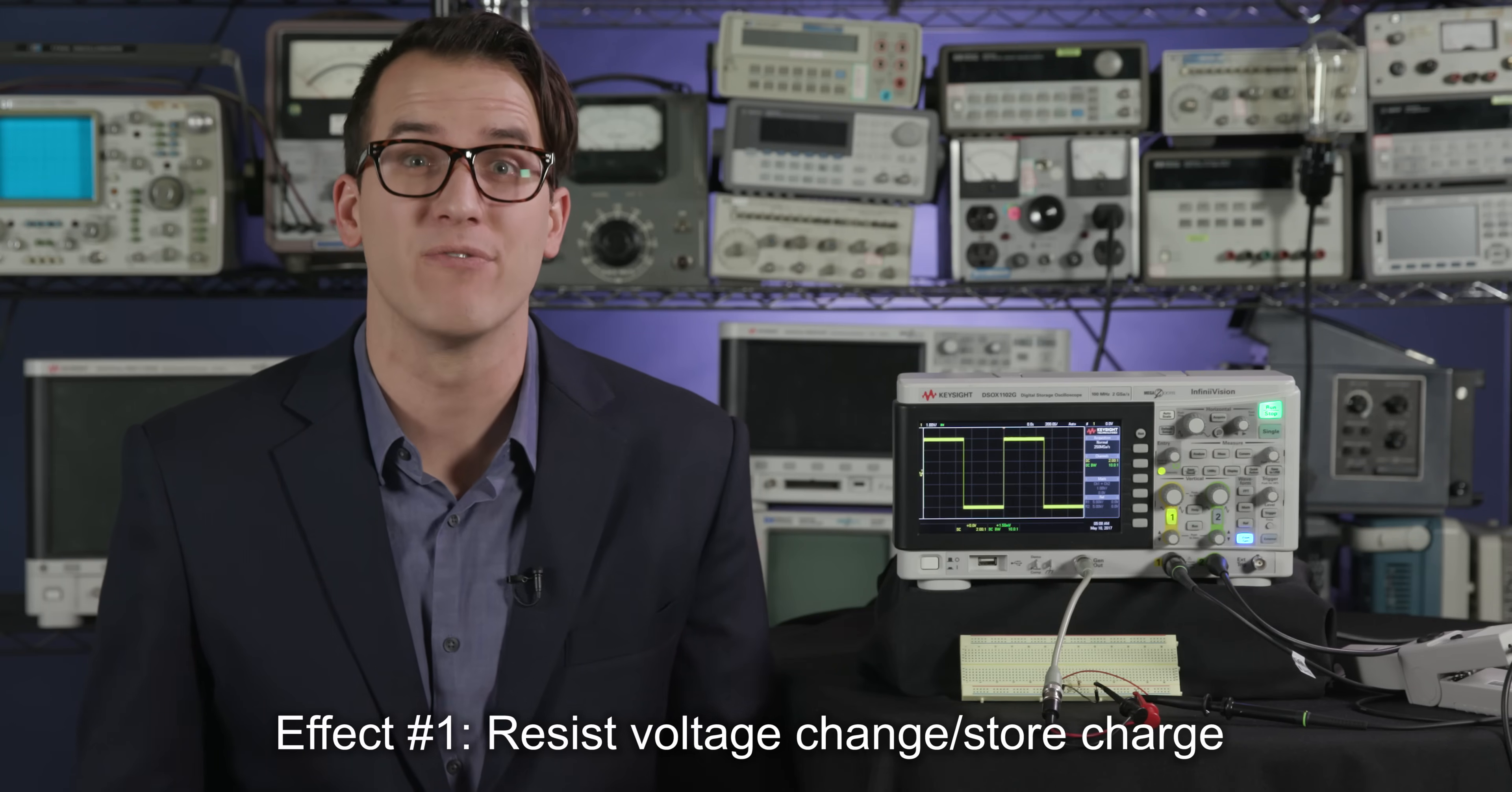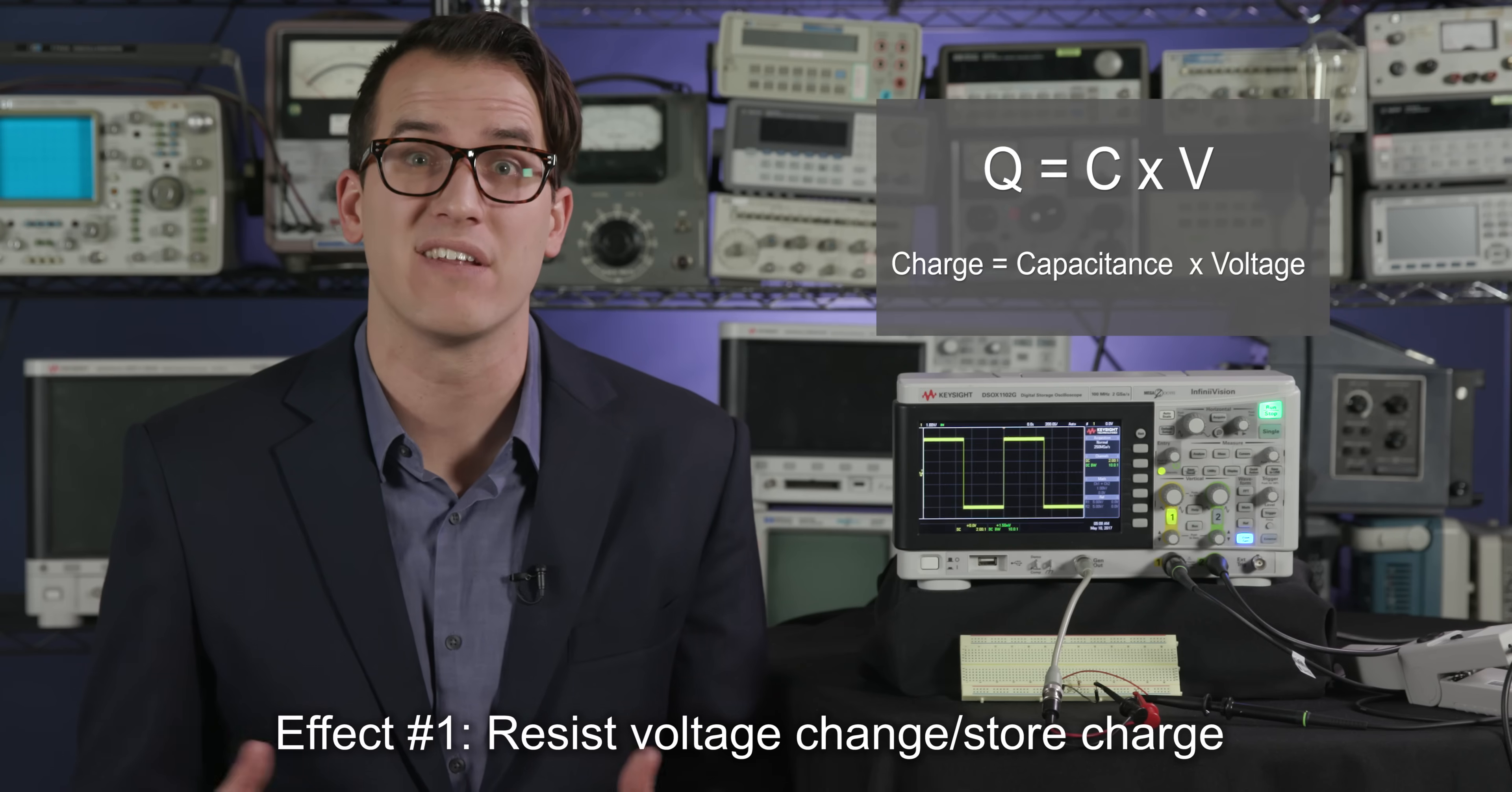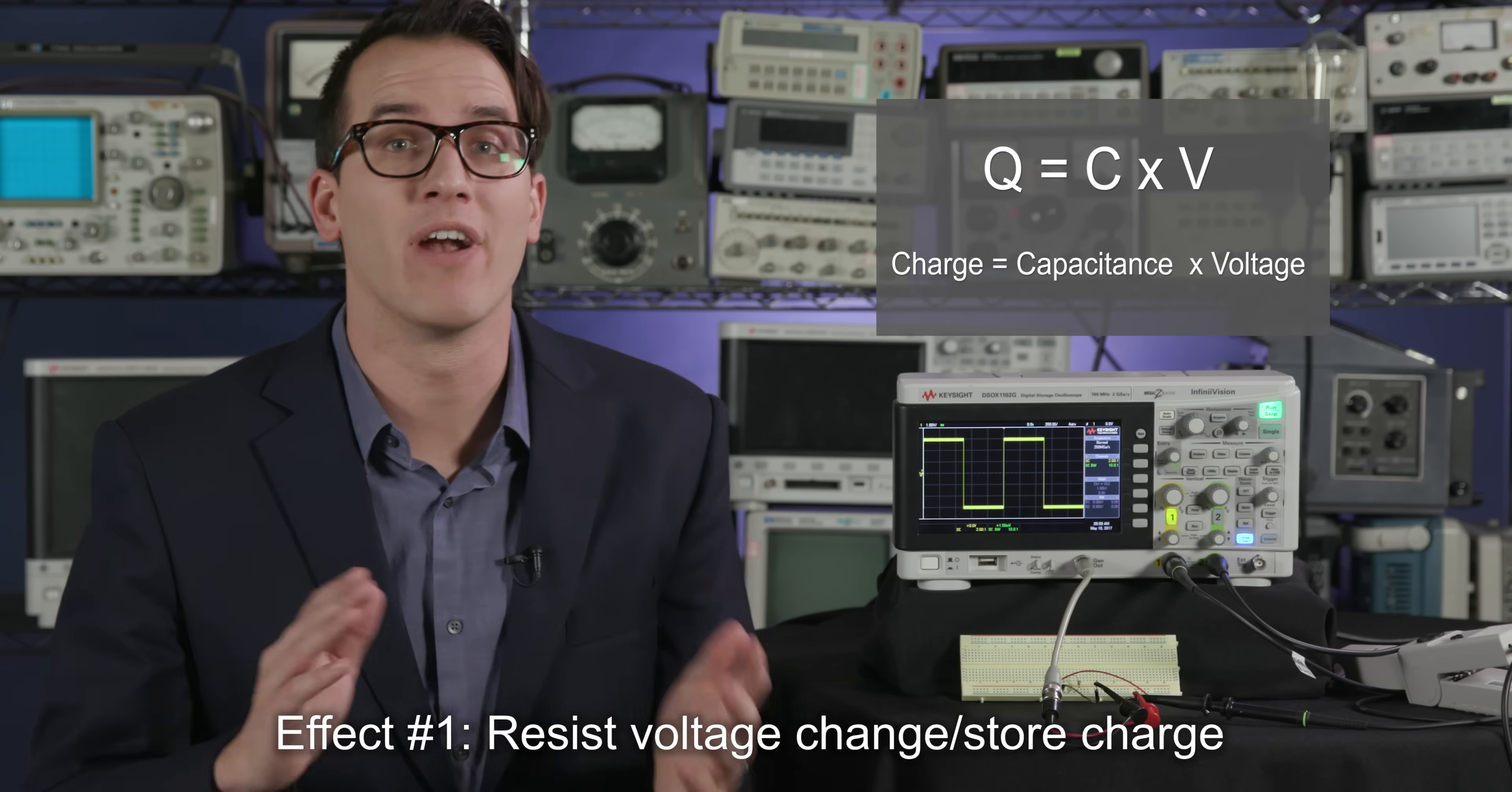The first effect that capacitance has on a system is it's going to resist a change in voltage and store charge according to the formula q equals c times v. So let's add the capacitor and compare before and after.